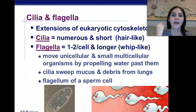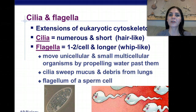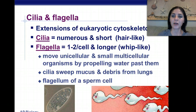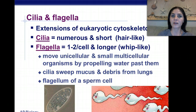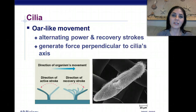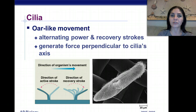We also have cilia and flagella. These are extensions of the eukaryotic cytoskeleton. Cilia are numerous and have short hair-like structures — they're kind of like little furry-looking cells. Flagella, we have one to two of them per cell; they're longer and whip-like. They move unicellular or small multicellular organisms by propelling water past them. The cilia are actually responsible for sweeping mucus and debris from our lungs. Flagella are responsible for movement of cells like sperm cells, propelling the sperm to the egg. Cilia have an oar-like movement, like they're rowing a boat, with alternating power and recovery strokes, just like a crew team.